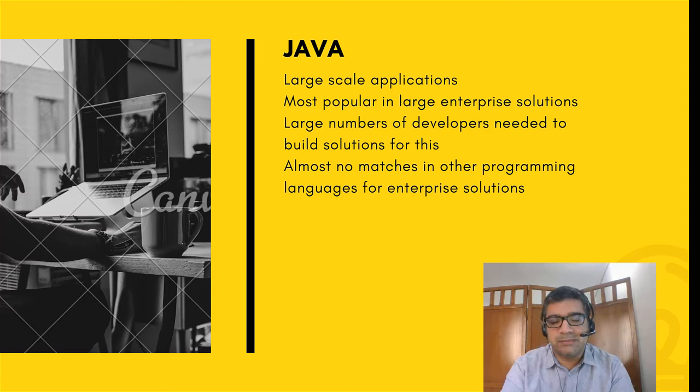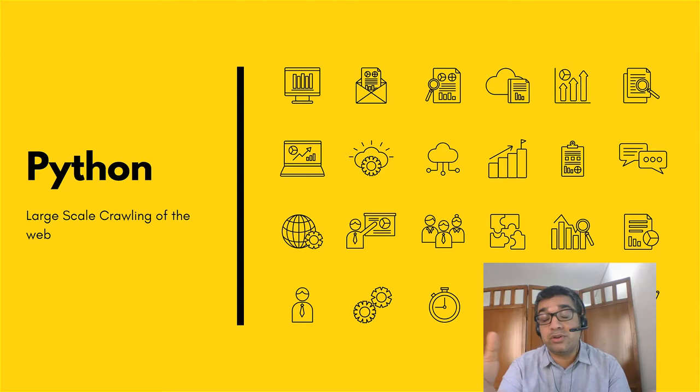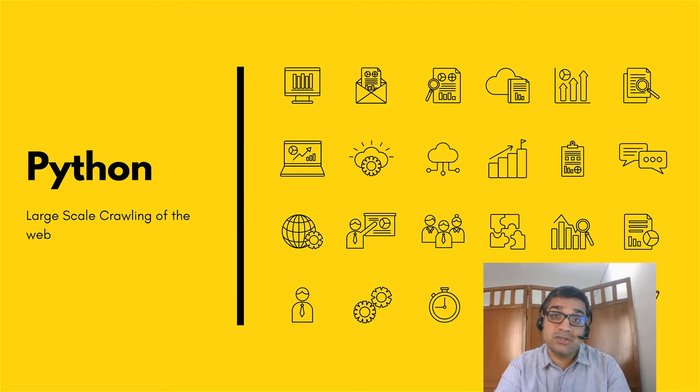Python is also a scripting language. It can be used when you have a lot of data across the internet that you need to gather — for example Google uses such solutions. Large organizations use Python to build really fast applications, like pulling together many PDF files from the internet and displaying them to users. Like Java, you won't find Python much in smaller companies; it's mostly used in large applications.